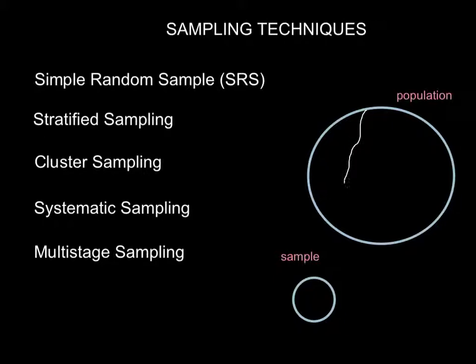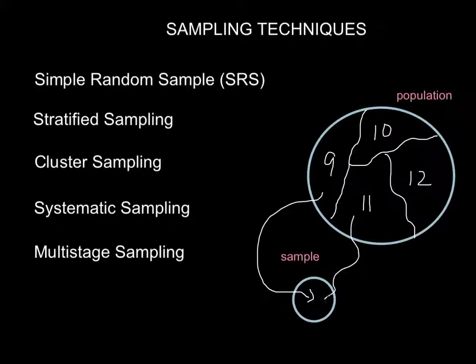Here, we might take our population and, before we survey it, break it into four groups: 9th graders, 10th graders, 11th graders, and 12th graders. And from each homogeneous group, we would collect a simple random sample and put them into our overall sample.